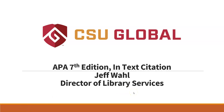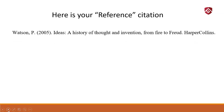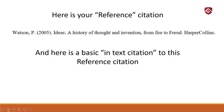Hi everybody. Today we are going to talk about in-text citation in APA 7th edition style. We're going to start off by looking at a reference citation — the citation you put in your references list at the end of your paper. This was a book I read and got some ideas from for my paper, and here's the basic in-text citation to that reference citation.